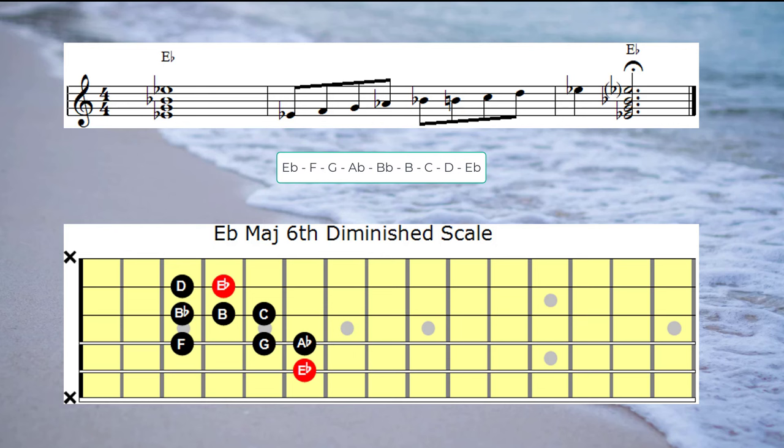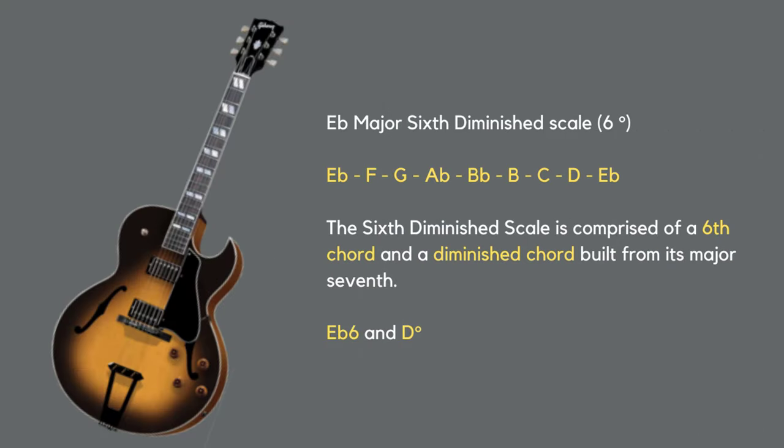If you've been following through the series you'll know that one of the remarkable features of the major six diminished scale is that it produces only two chords: a major sixth chord and a diminished chord built on the seventh degree of the scale. The two chords produced from the E-flat major sixth diminished scale are E-flat six and D-diminished seven.